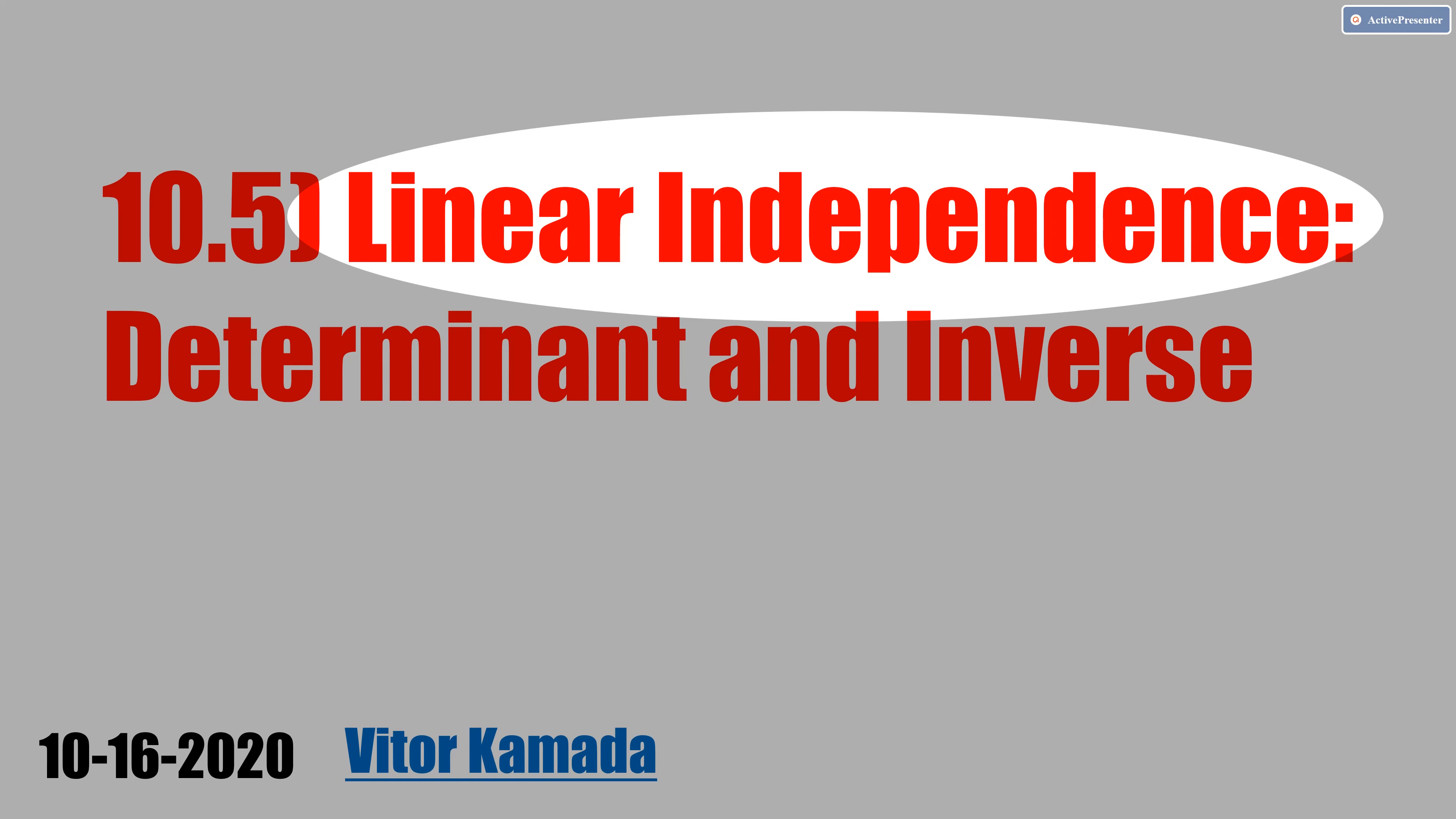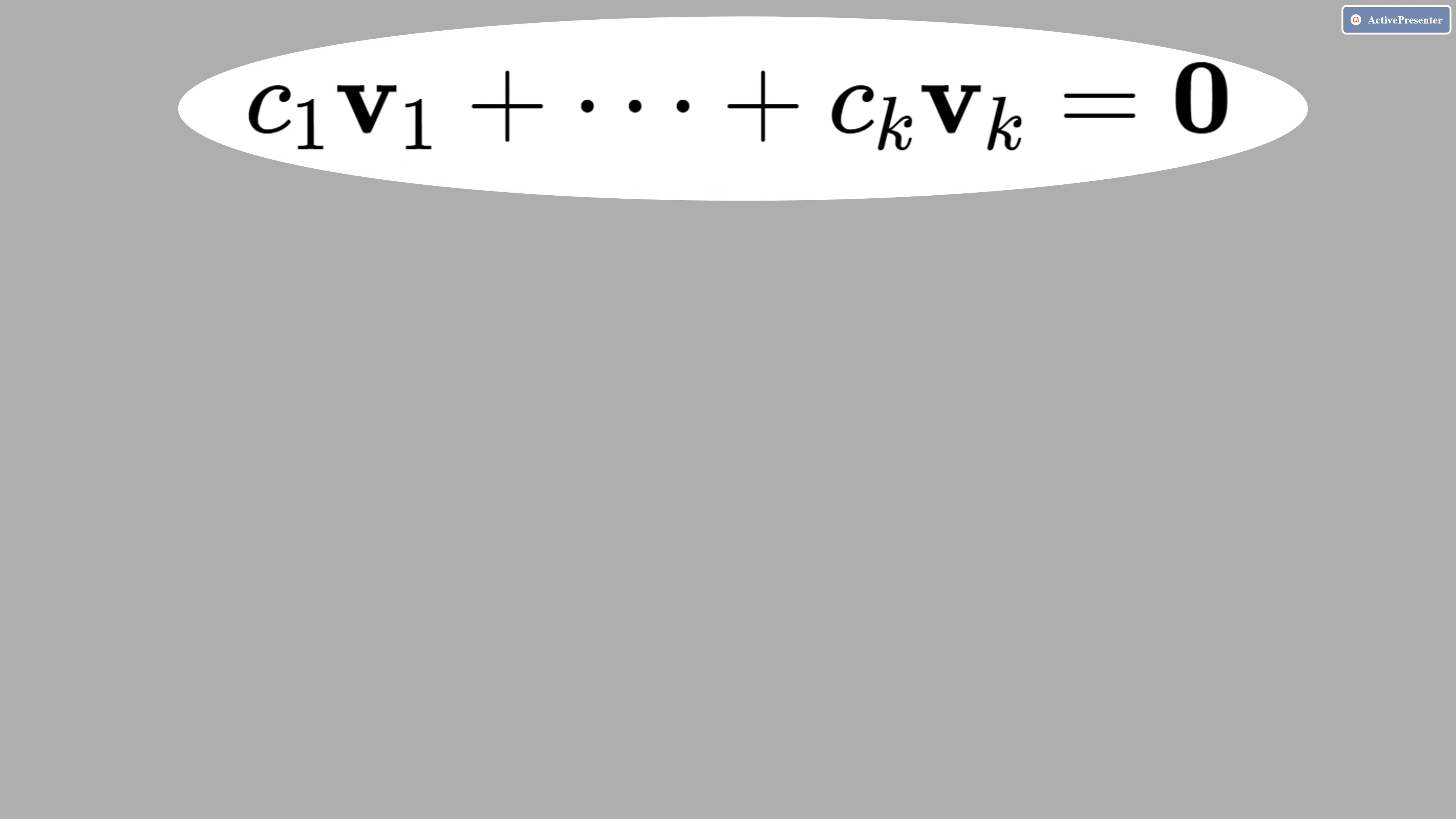In this video, let's learn how to check for linear independence. Let's start with this equation here. v1 and vk, they are vectors. c1 and ck, they are scalars.